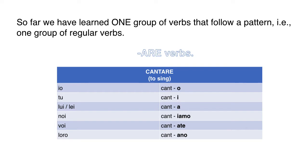This is an ARE verb and it follows a pattern. We can do this with any other ARE verb. Mangiare means to eat: io mangio, tu mangi, lui mangia, noi mangiamo, voi mangiate, loro mangiano. Tornare means to return: io torno, tu torni, lui torna, noi torniamo, voi tornate, loro tornano — and so on with any and all of the ARE verbs from the vocab list.